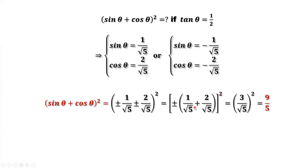Simplifying the inside: the sum gives us 3 over the common denominator square root of 5. Squaring that gives us 9 over 5. This is the final answer.